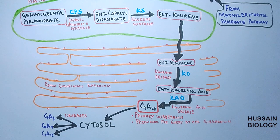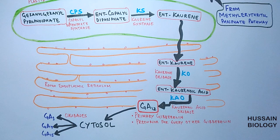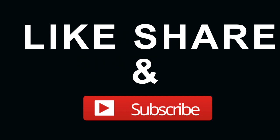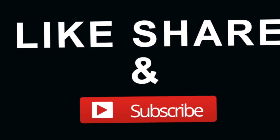To get an overview: first, some products are produced in plastids, then they are transported to the endoplasmic reticulum where they are converted into different biochemicals. This is all about the synthesis of gibberellins. If you like the video, give it a thumbs up and make sure to subscribe to this channel. Thanks.